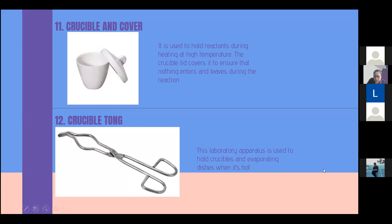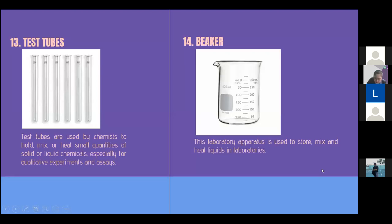I will now pass the virtual floor to Miss Arok Chapel. Good morning ma'am. For number 13 we have the test tubes. Test tubes are used by chemists to hold, mix, or heat small quantities of solid or liquid chemicals, especially for qualitative experiments and assays. A test tube also known as a culture tube or sample tube is a common piece of laboratory glassware consisting of a finger-like length of glass or clear plastic tubing open at the top and closed at the bottom. For number 14 we have the beaker. This laboratory apparatus is used to store, mix, and heat liquids in laboratories. Beaker is generally a cylindrical container with a flat bottom. Most also have a small beak to aid pouring as shown in the picture. Beakers are available in a wide range of sizes from one milliliter up to several liters.